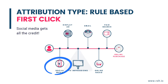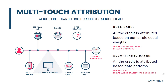With the first click approach, the first touchpoint gets all the credit. Multi-touch attribution, or MTA, is commonly referred to as the holy grail in advertising measurement. In MTA, there are two main approaches. The first is the rule-based approach, which divides the credit for the purchase across various touchpoints with predetermined weights, such as giving the same weight to each touchpoint. This approach is easier to implement but can lack accuracy. The second approach is algorithmic, leveraging machine learning to attribute credit only to the channel that truly deserves it. This approach is more accurate but also more sophisticated and requires statistical knowledge to implement.